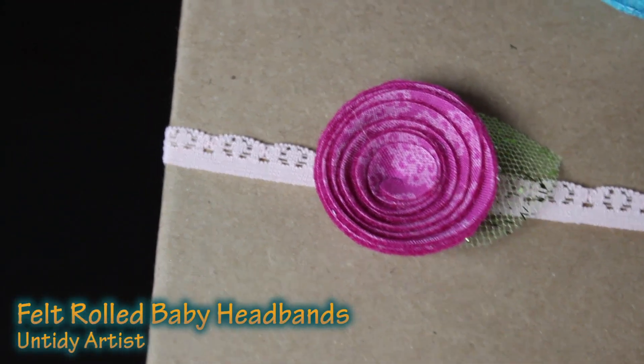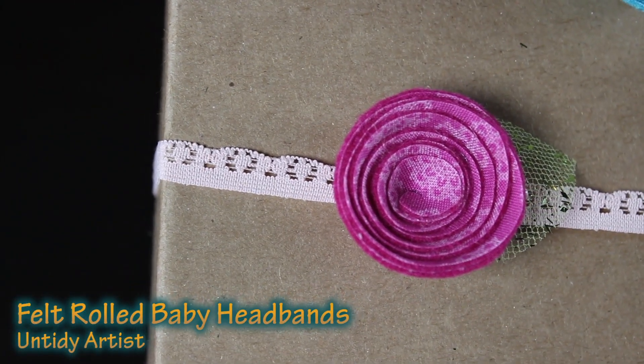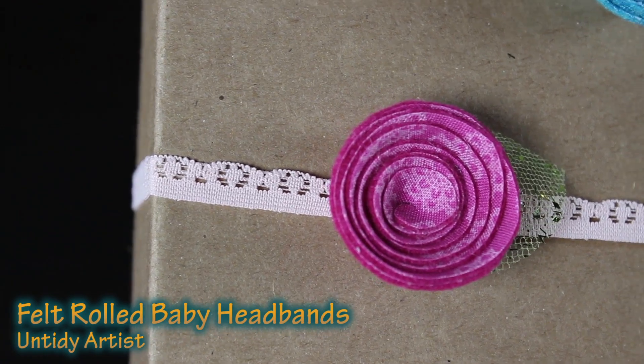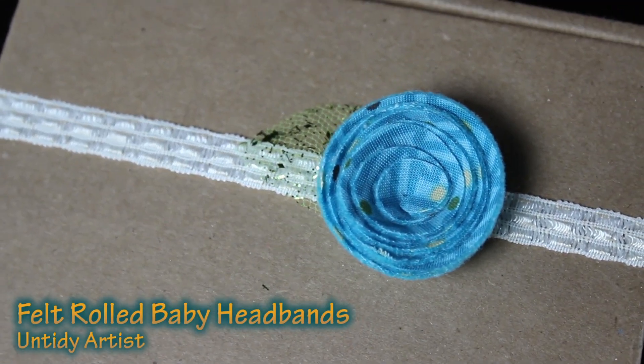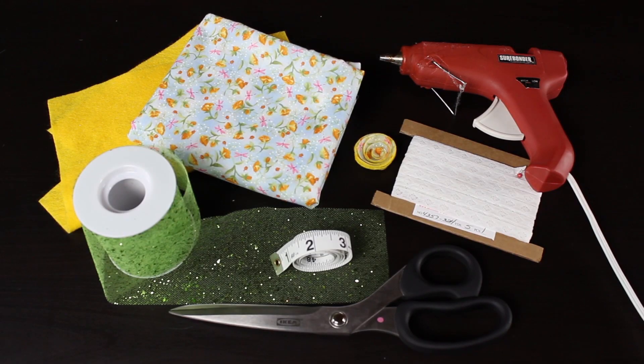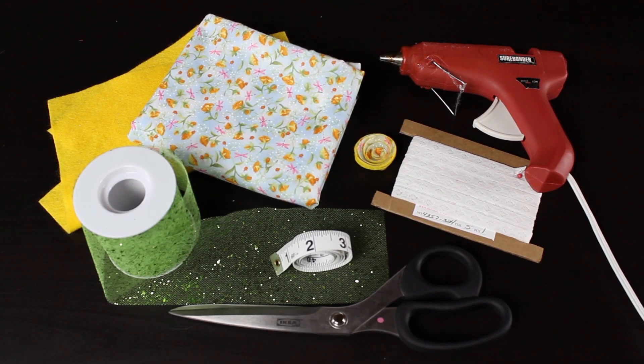This cute little headband is made out of a rolled flower using felt and fabric and it makes this sweet little rosette. We're going to attach it to some stretchy lace to give us this cute little headband. Let's grab some supplies and get started.